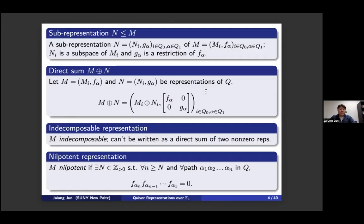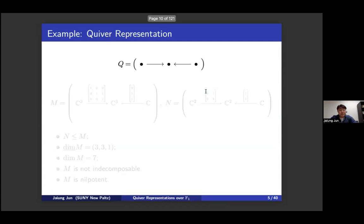The dimension of a representation is the sum of dimensions at each vertex. A sub-representation places a subspace at each vertex with restricted maps at each arrow. Direct sum is defined vertex-wise by diagonal matrices. An indecomposable representation cannot be written as a direct sum of two non-zero representations, and a nilpotent representation means that composing linear maps sufficiently many times yields zero.